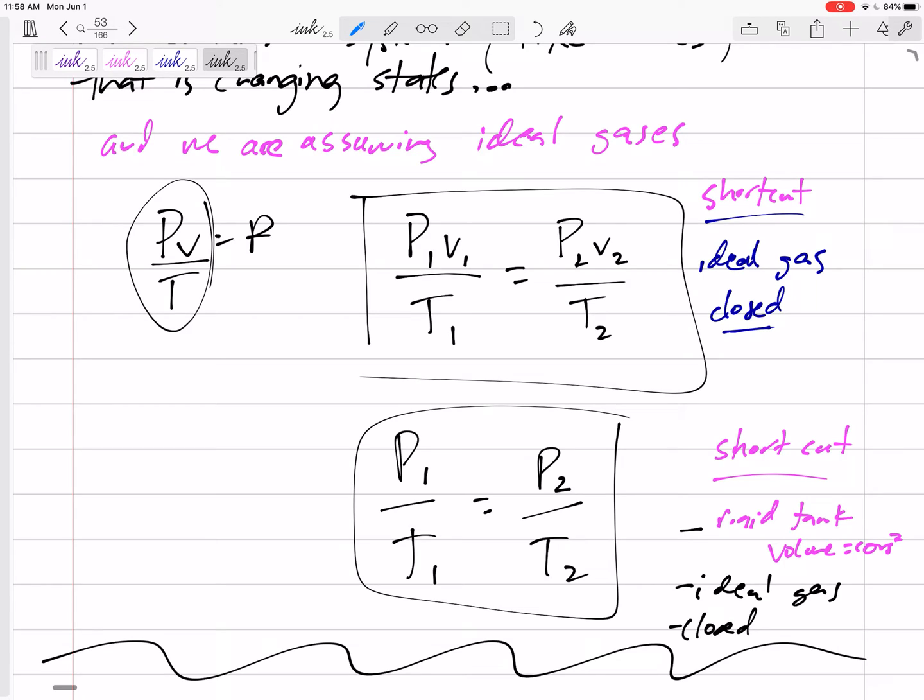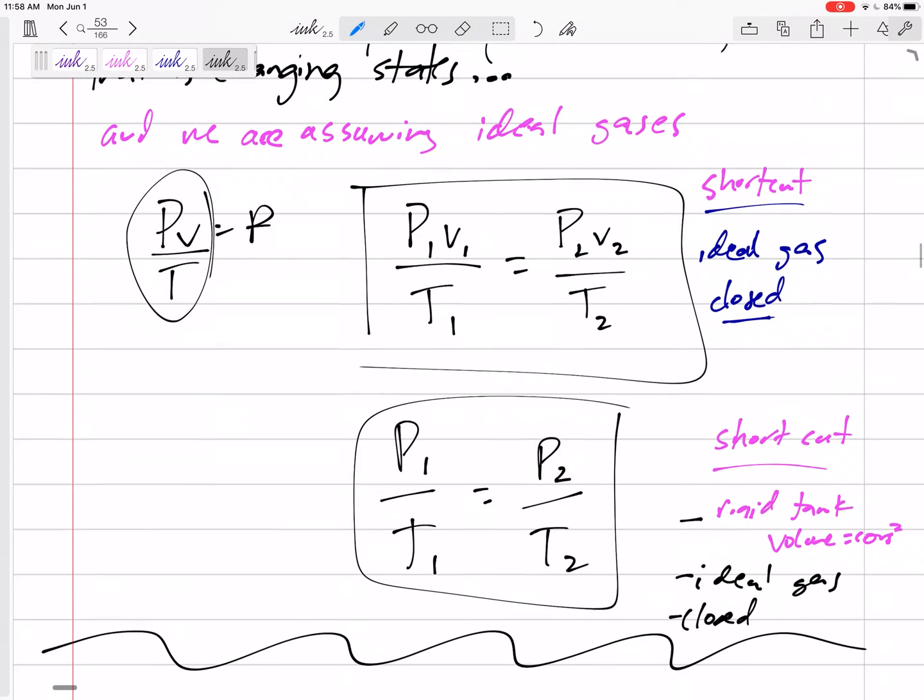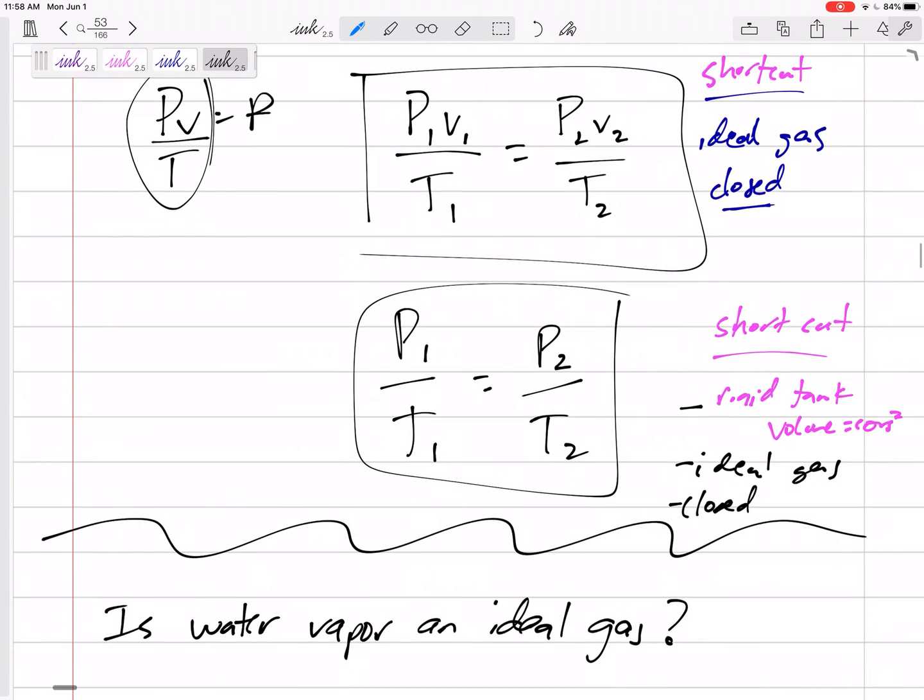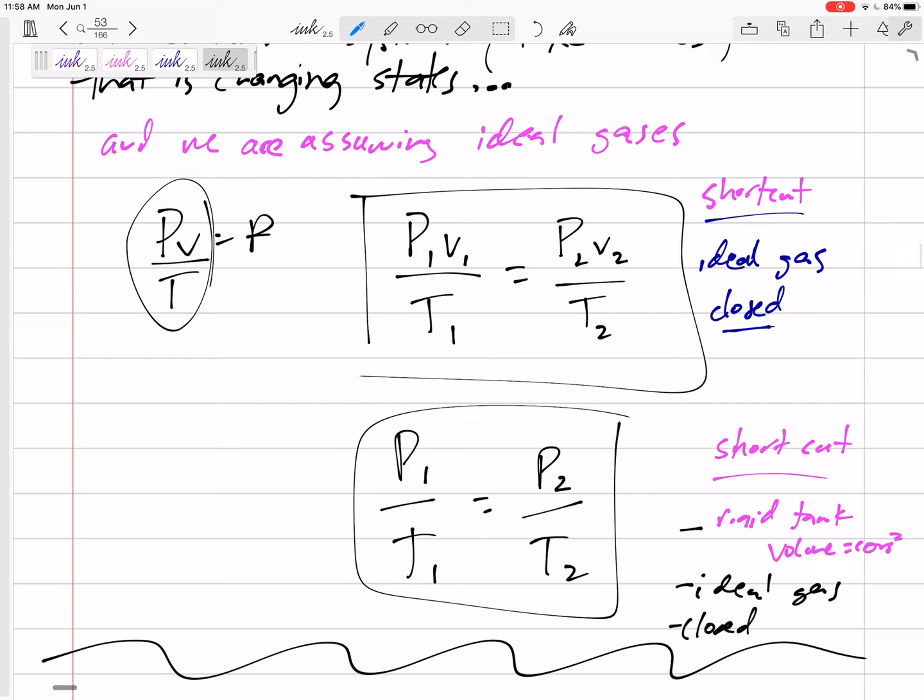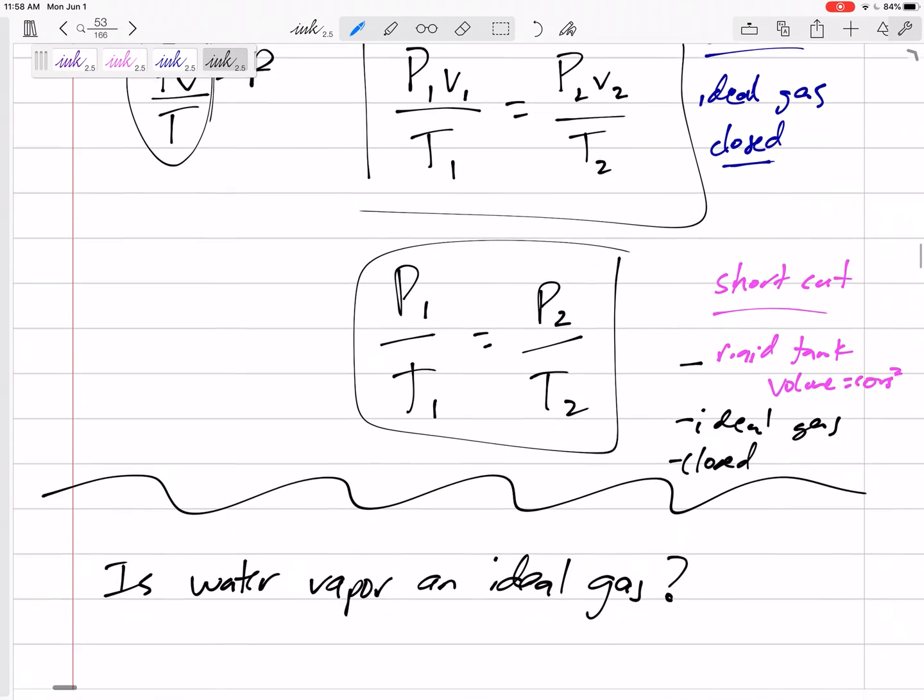Many times, if you don't use the shortcut, you'll still get the same answer. The shortcut makes it quicker. Sometimes if you don't use the shortcut, then you just have to say, actually, I'm not told anything about the volume of this tank. Let me just assume a volume of one. You kind of end up multiplying it one way somewhere and dividing it in another location. All right. So anyway, two shortcuts to use for ideal gases, if it's closed and ideal gases, if it's closed and rigid.